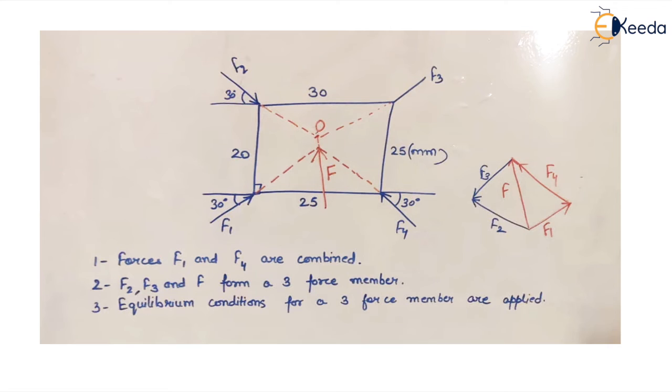Now this system is reduced to three forces: f2, f3, and f. For three forces, the condition is that f, f2, and f3—their line of action should coincide at a point. So we extend the line of actions of f2, f3, and f, and we see that yes, they do coincide at a point, which is point o.